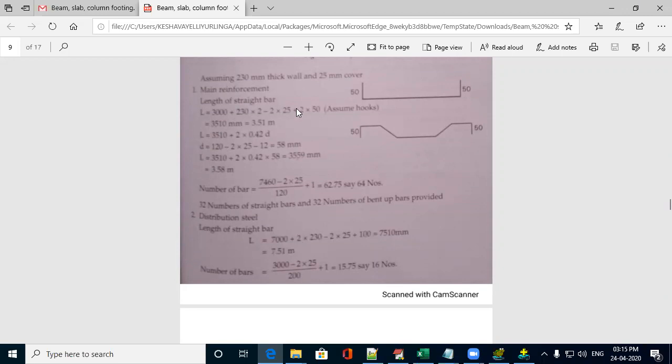Plus 100, why? Because hooks. 2 times the 50. This 100 is because 2 times the hook plus 100. So, it will be 7.51 meter.